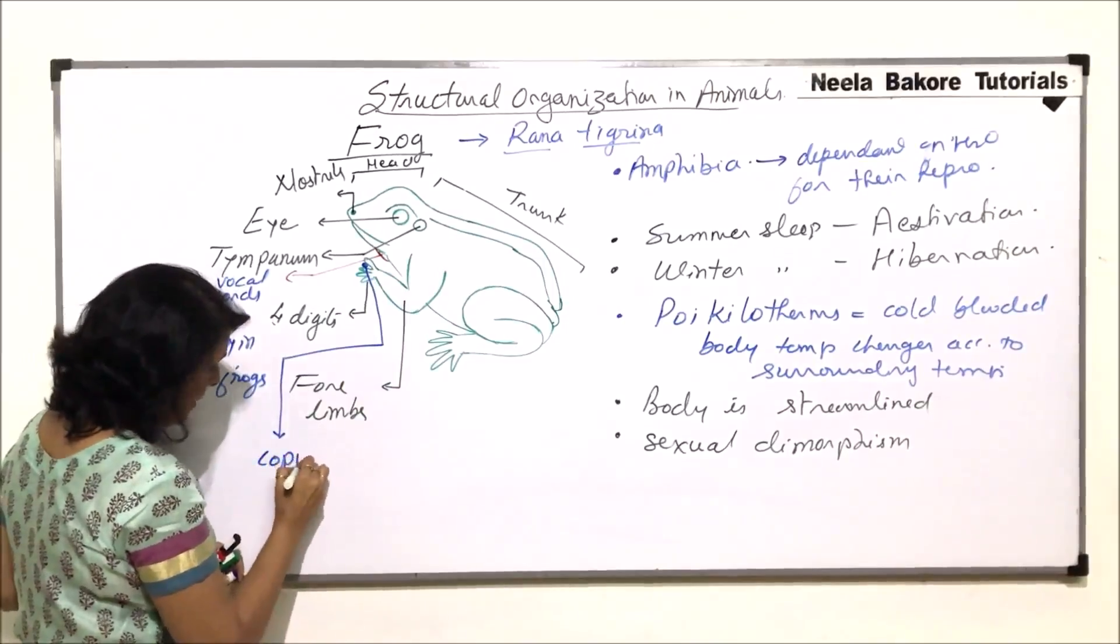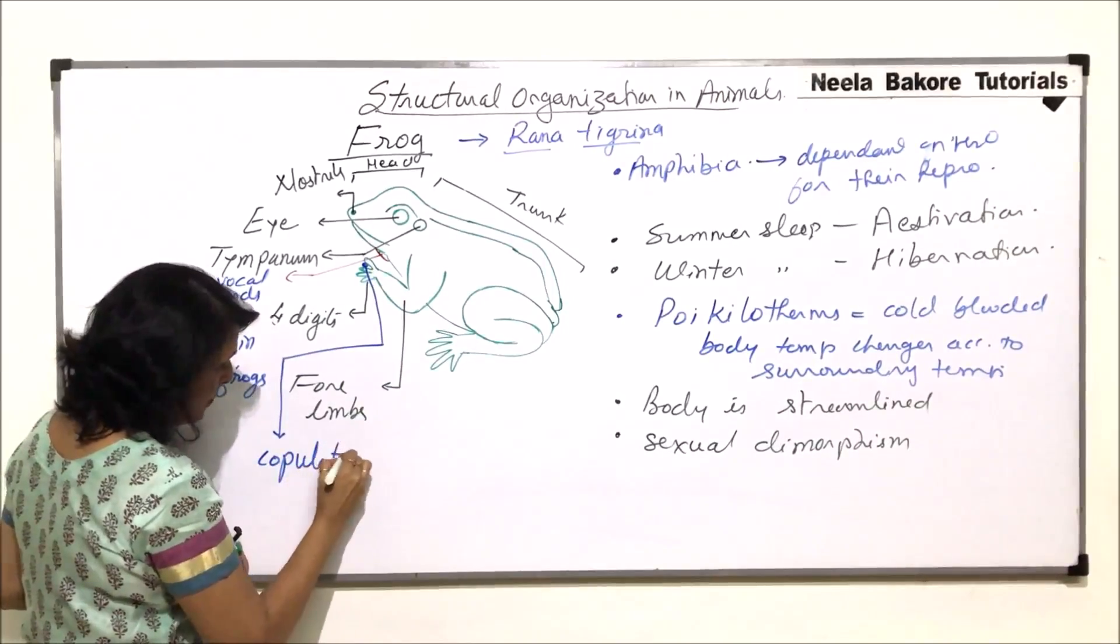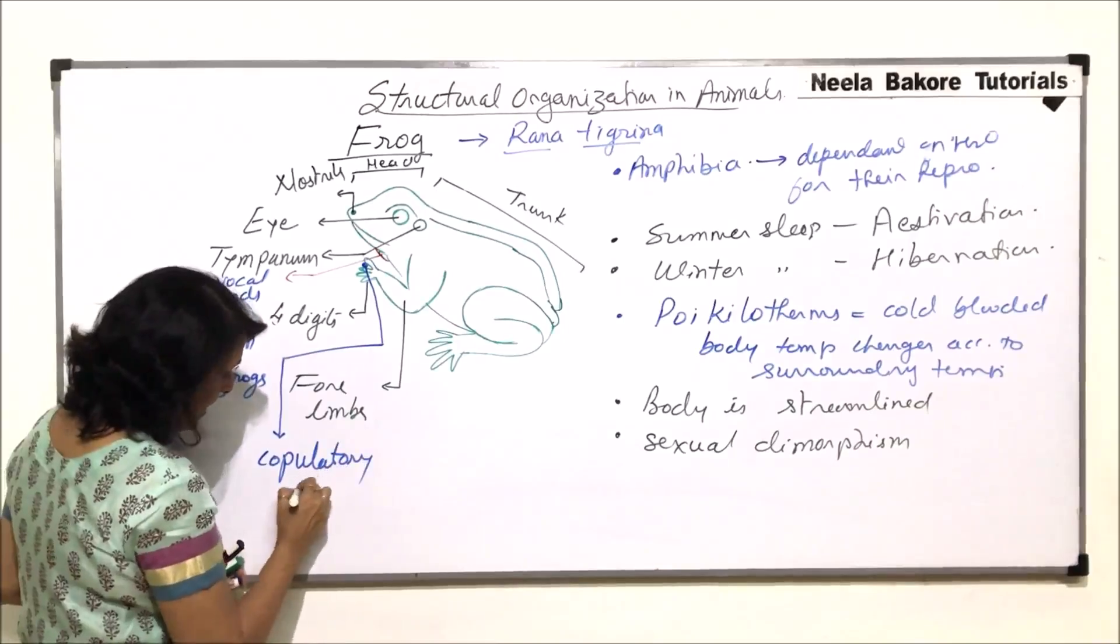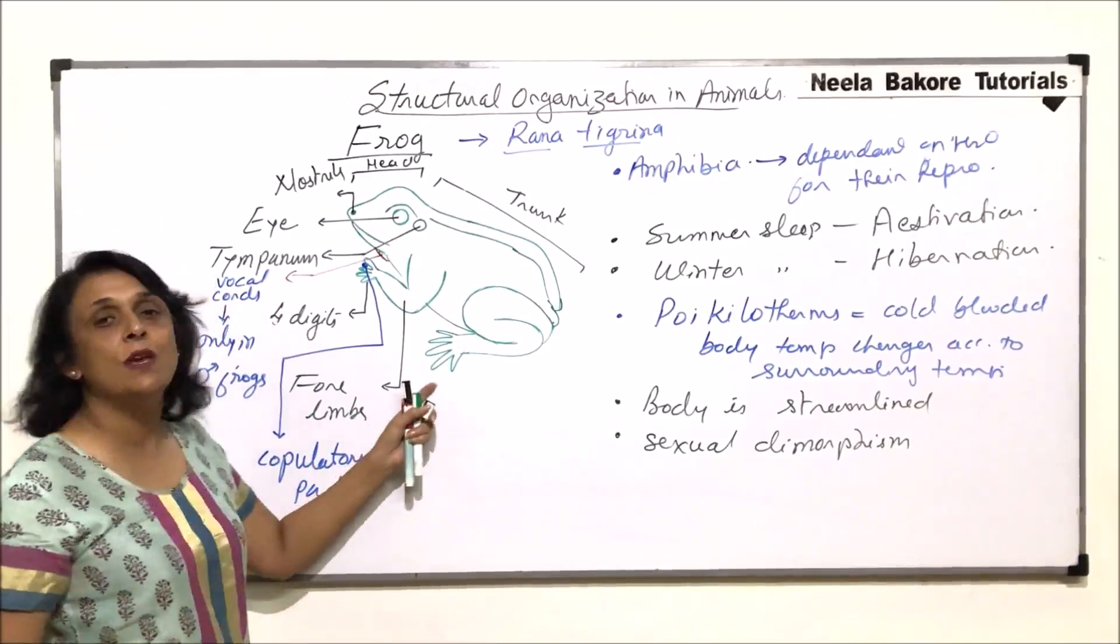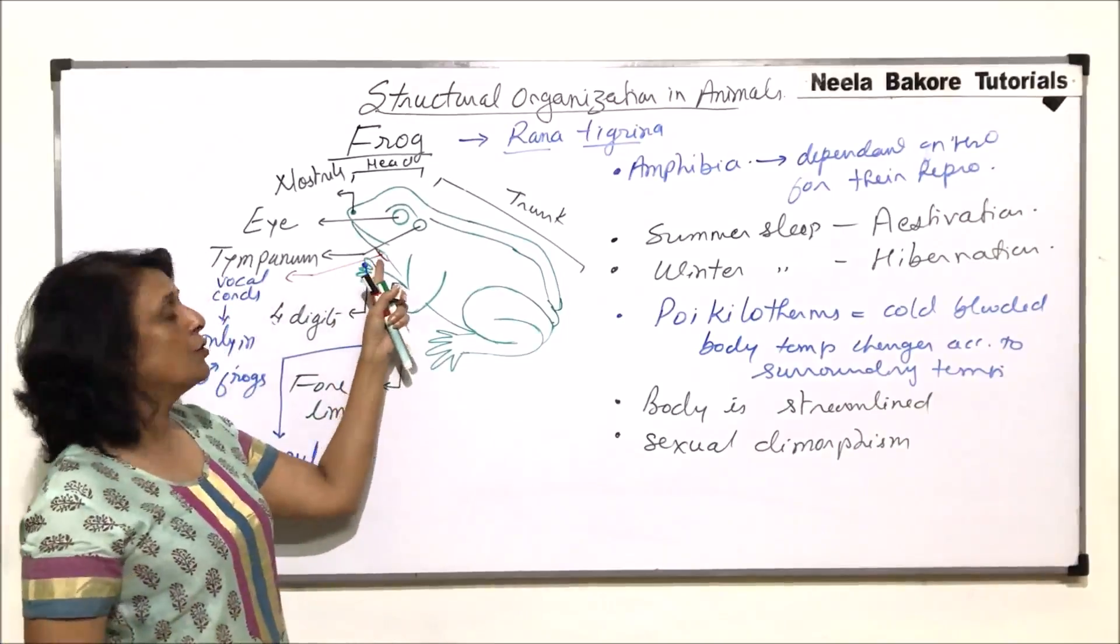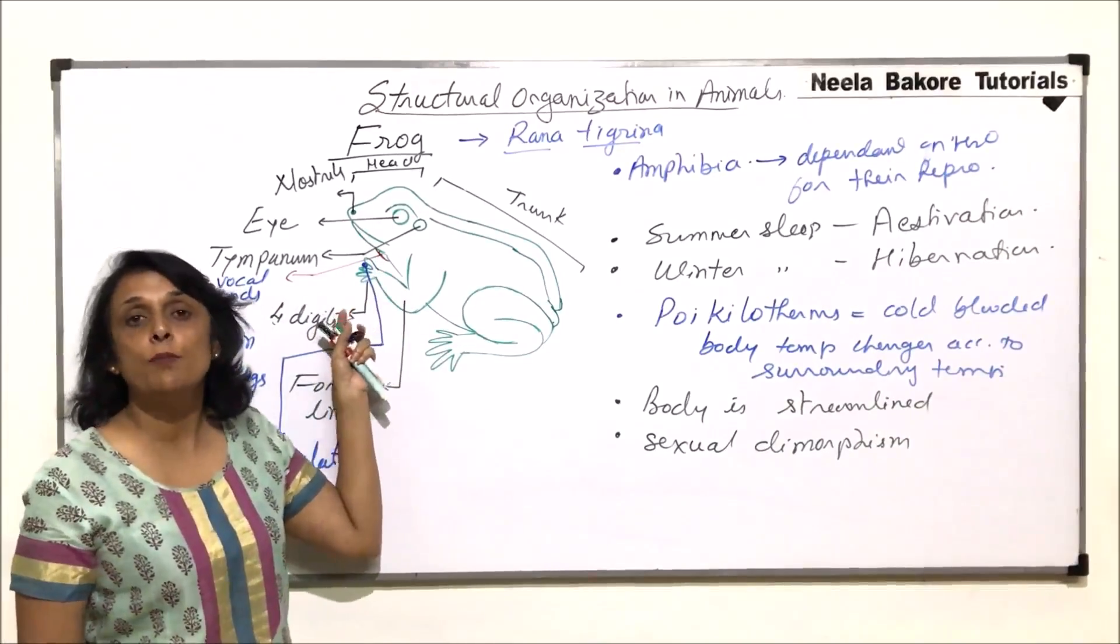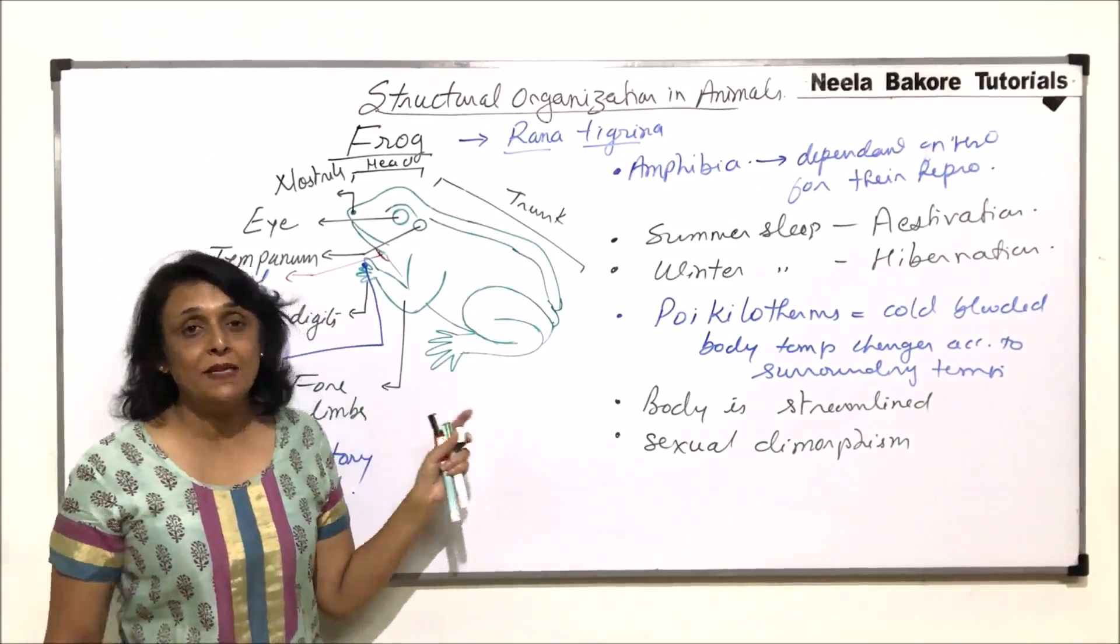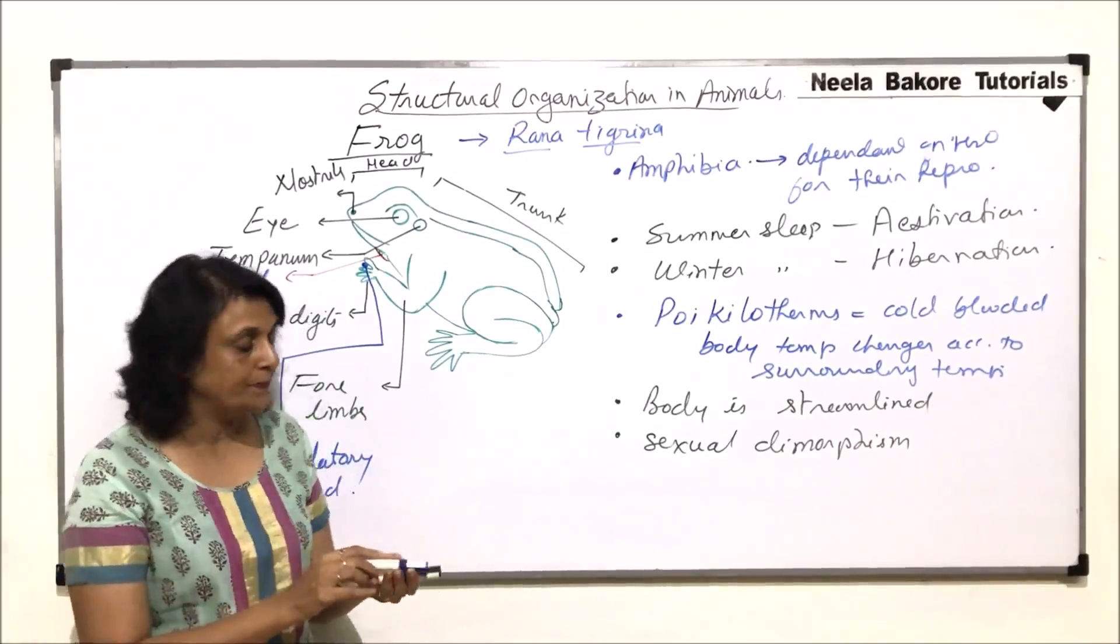Beneath the first digit here, there is a copulatory pad. So this copulatory pad is also visible only in case of male frogs. That means the diagram which we have shown here is of male frog. If we don't show these vocal cords and don't show these copulatory pads, that means it is a female frog.